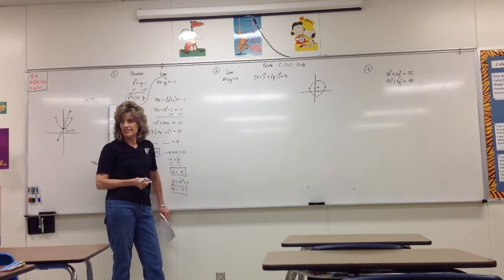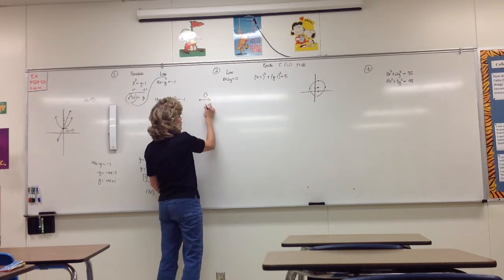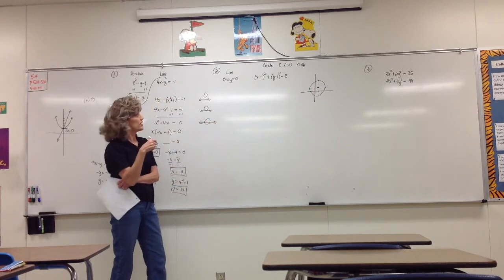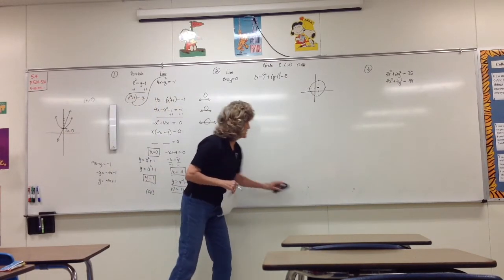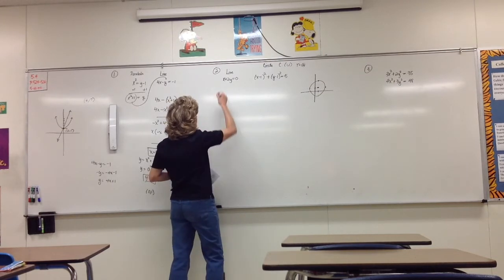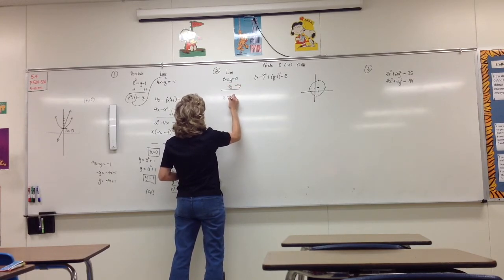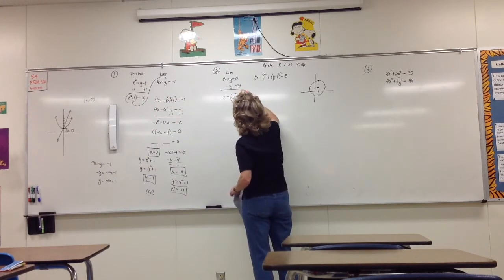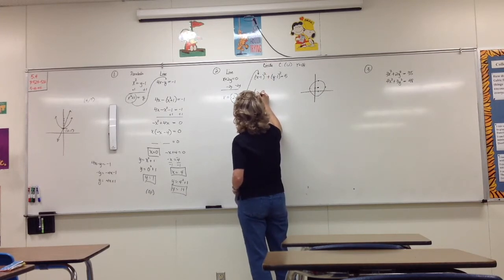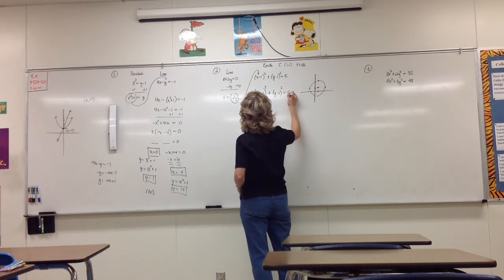If you graph a circle and a line, they might have no points in common, one point in common, or two points in common. We're trying to figure out what's happening here. The easiest variable to isolate is x. If we subtract 2y, we get x equals negative 2y. Then in the other equation, everywhere we see x, we replace it with negative 2y.